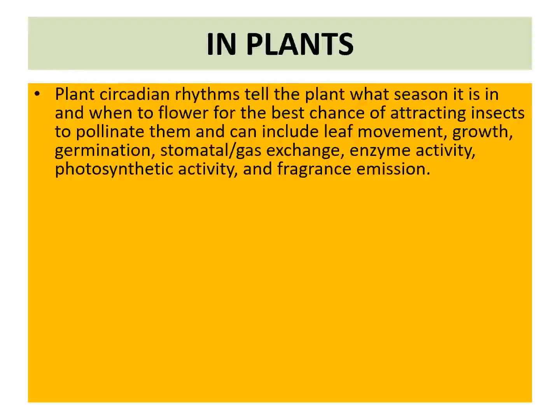In plants, the plant circadian rhythm tells the plant what season it is in and when to flower for the best chance of attracting insects to pollinate them. It can include leaf movement, growth, germination, stomatal opening and closing, gas exchange, enzyme activity, photosynthetic activity, and fragrance emission.